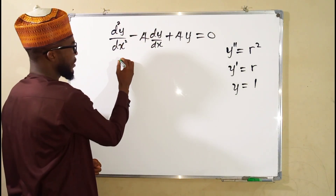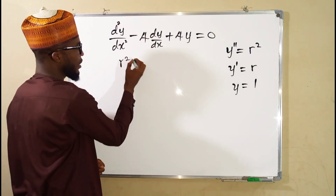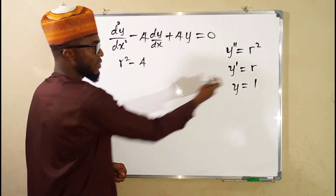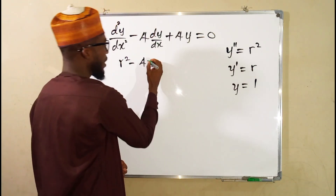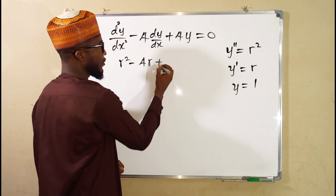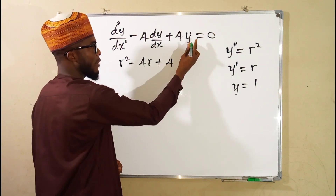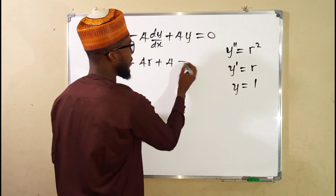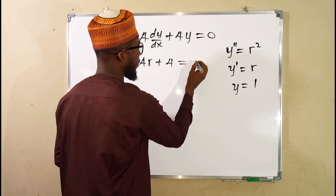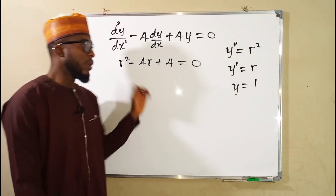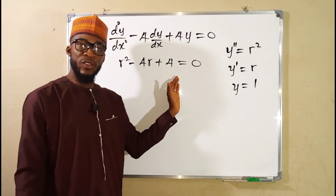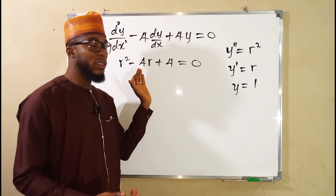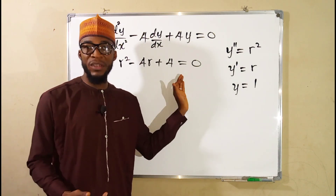So now let us substitute. We have r squared minus 4 times r, then plus 4 times 1, and the whole of this is equal to 0. So this is our characteristic equation, or the auxiliary equation, which is in the form of a quadratic equation.